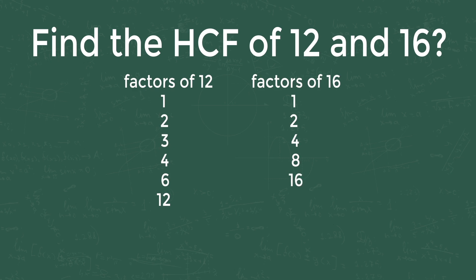As per HCF definition, 4 is the highest number which exactly divides all the numbers. So, HCF of 12 and 16 is 4.